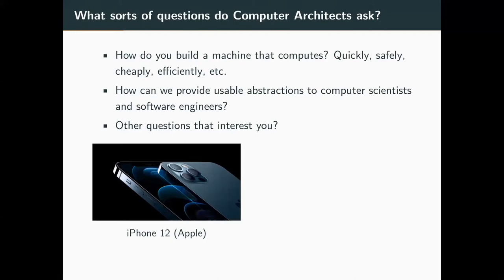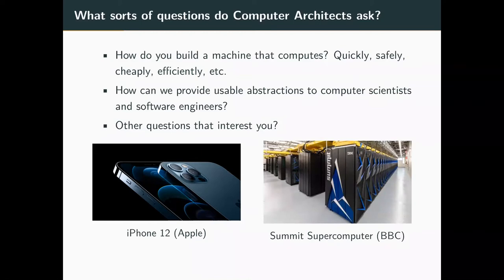Another thing we'll be looking at is the fact that computing across different form factors is actually pretty much the same. Here's an iPhone, and here's a Summit supercomputer — currently the fastest computer in the world according to top500.org. You might think they have nothing in common, but that's not actually the case. There are many of the same fundamental components, just arranged in clearly different form factors.